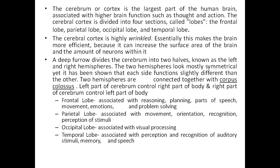The cerebral cortex is divided into lobes: frontal lobe, parietal lobe, occipital lobe, and temporal lobe. The parietal lobe is associated with movement, orientation, recognition, and perception of stimuli. The occipital lobe is associated with visual processing. The temporal lobe is associated with perception and reception of auditory stimuli, memory, and speech.